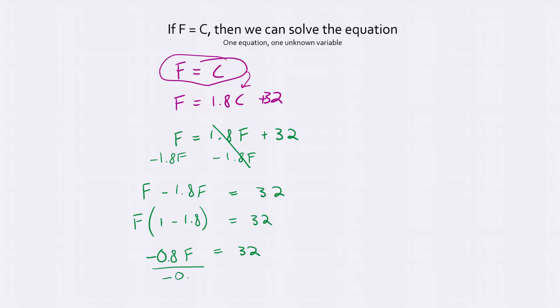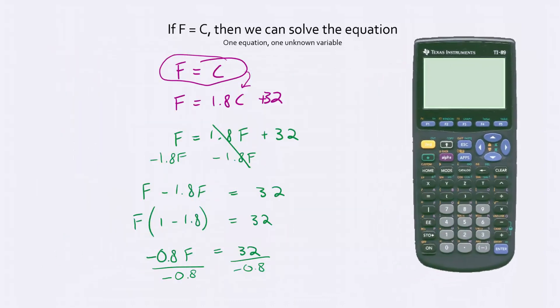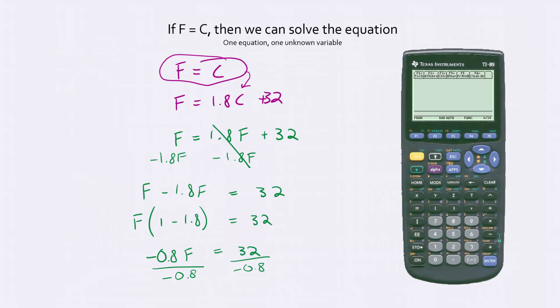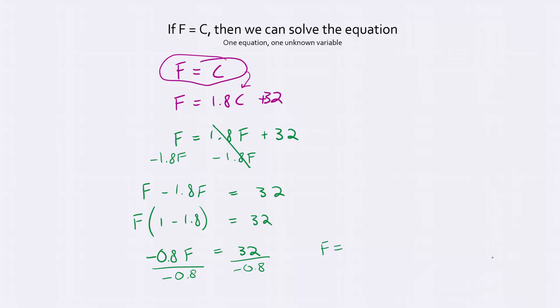So we're going to divide both sides by negative 0.8. Throw that in your calculator if you can't do that one quite in your head. So then we use our calculator and then we type it in, 32 divided by negative 0.8, and that equals f equals negative 40. So this means that at negative 40 degrees, anything, a Fahrenheit thermometer and a Celsius thermometer show the same number. And that's our answer.